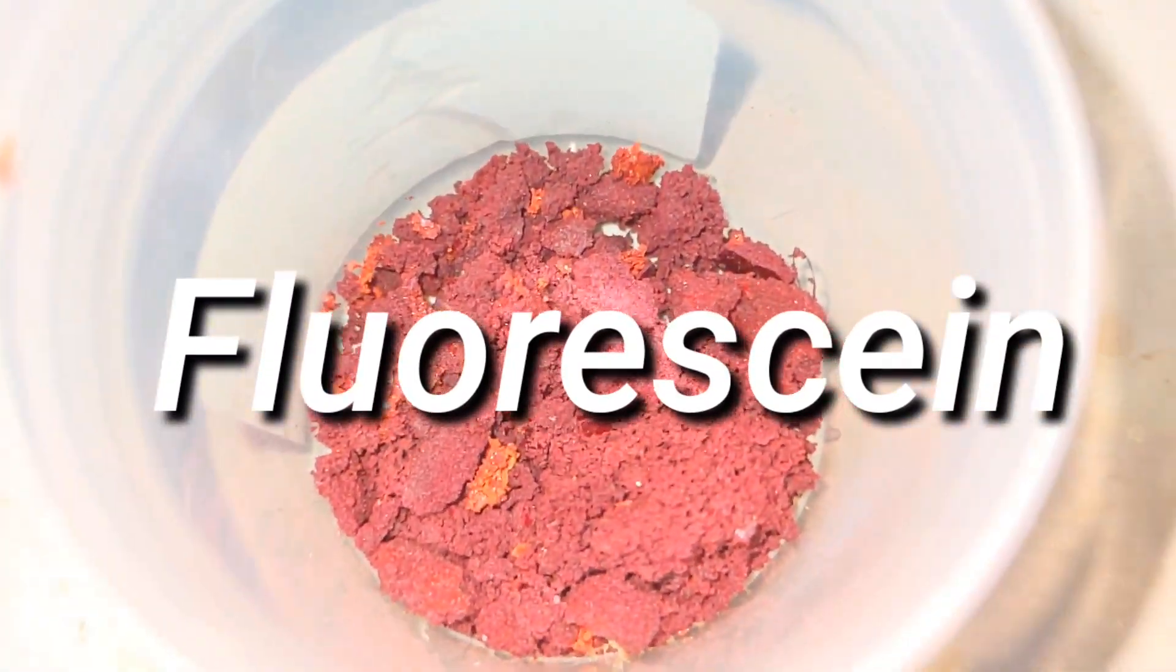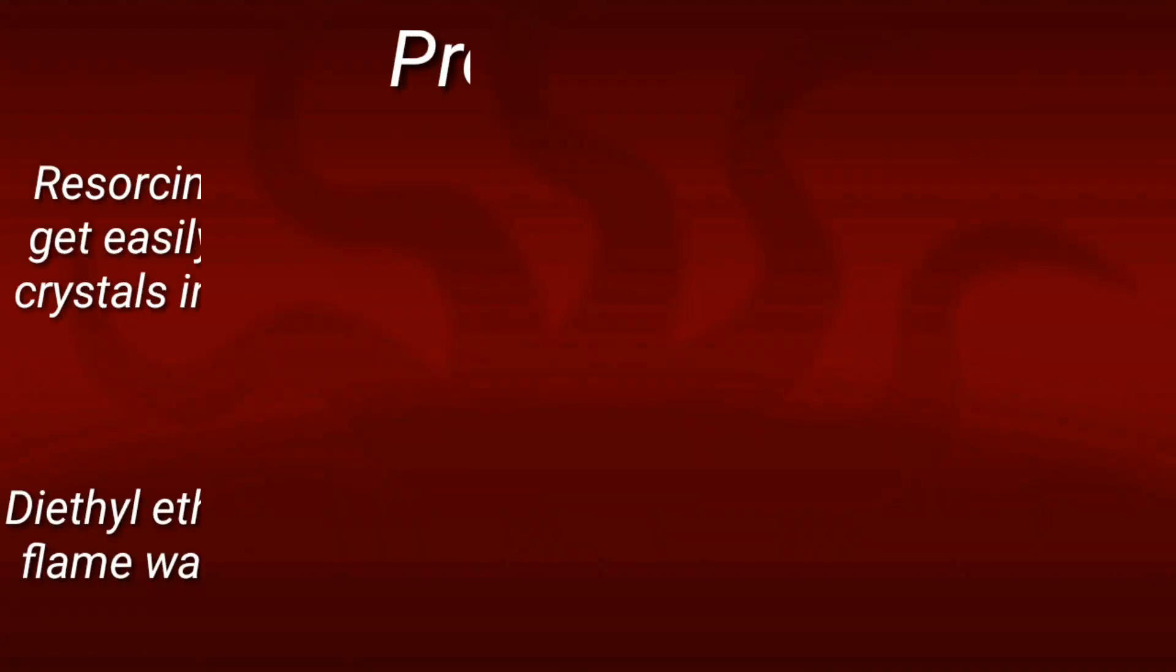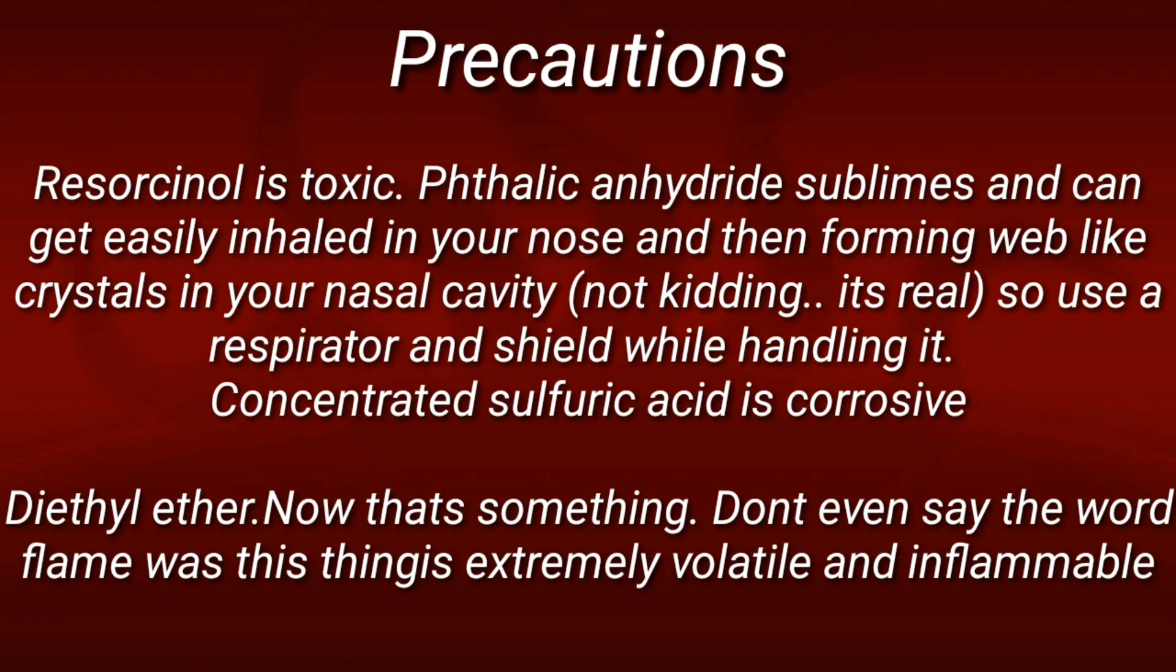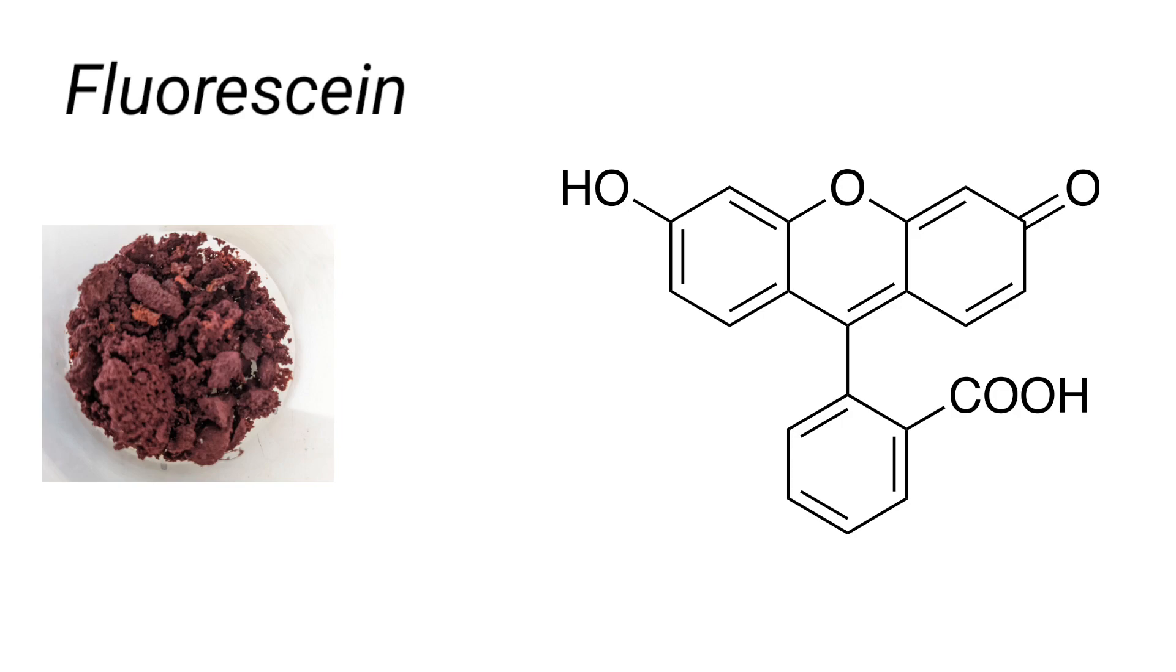Hello friends. In this video, we will synthesize fluorescein. Fluorescein, as the name suggests, is an organic compound that shines beautifully under UV light, made by the condensation of resorcinol with phthalic anhydride.